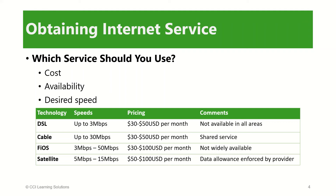Another technology is fiber optic service, provided by several telecom companies. This technology runs over fiber optic cable. The service is called fiber to the home, or FTTH, and is starting to become available. FTTH offers speeds from 3 Mbps up to 50 Mbps, and pricing from 30 to up to about 100 US dollars per month depending on the provider and the package.